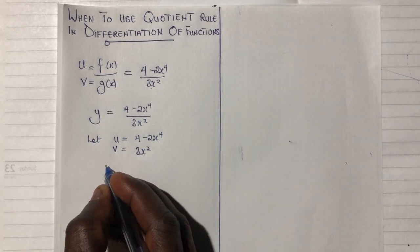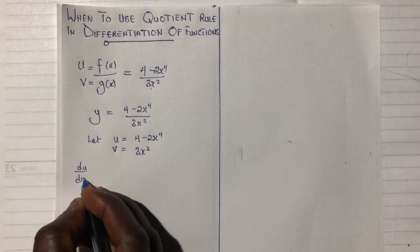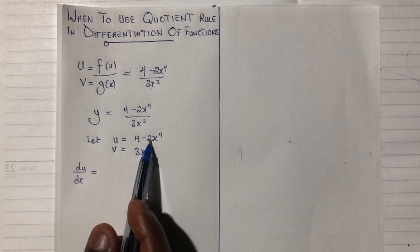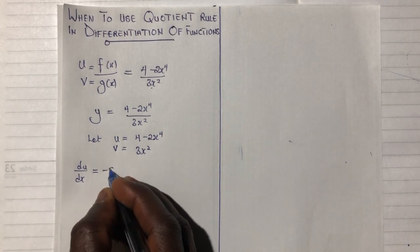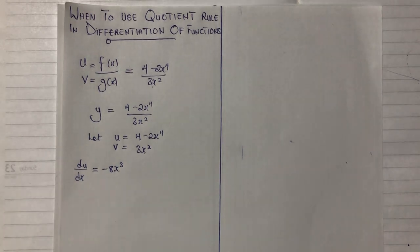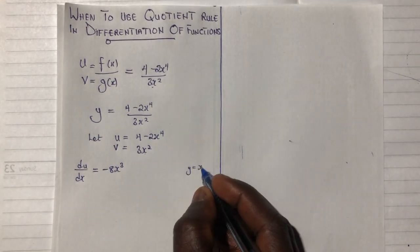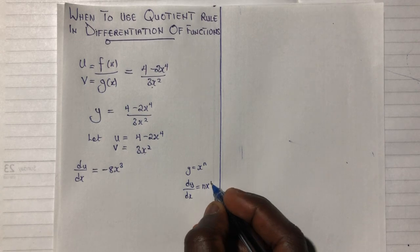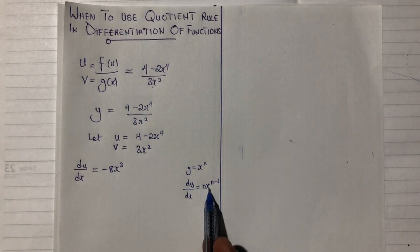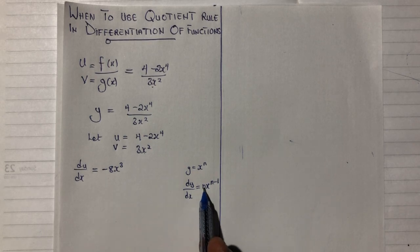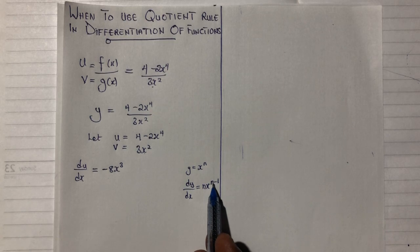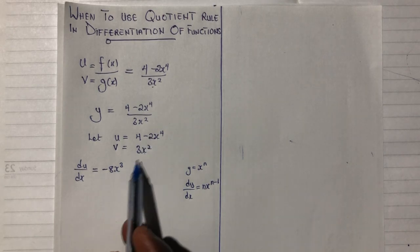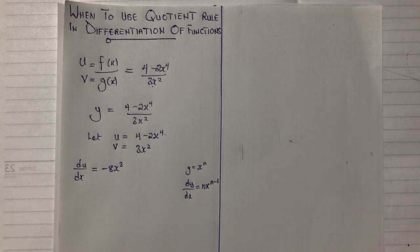When I differentiate u, du/dx equals: the derivative of the constant 4 is 0, so I get minus 8x raised to the power 3. The rule is: if y equals x to the power n, then dy/dx equals n times x to the power n minus 1. So I multiply the coefficient by the exponent: minus 2 times 4 gives minus 8, and 4 minus 1 gives 3.